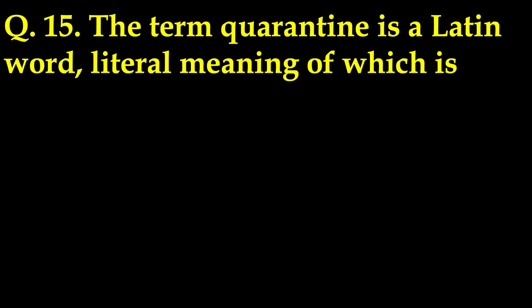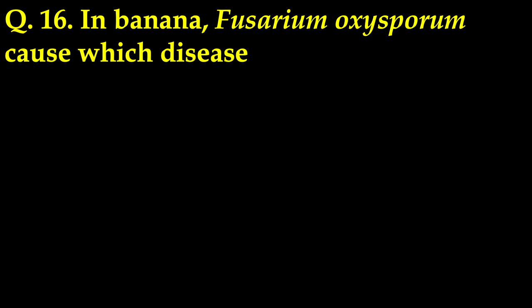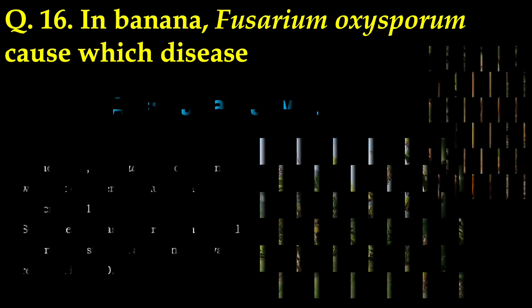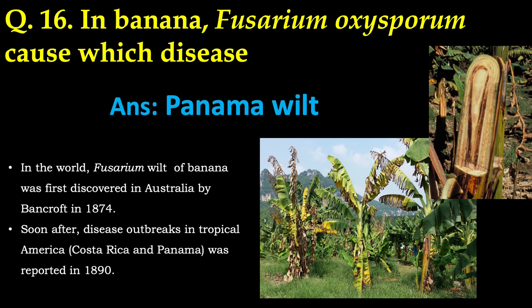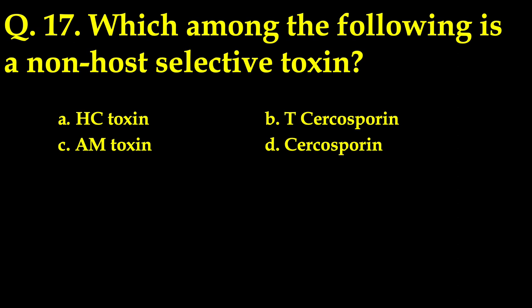This was a simple question. The term quarantine is a Latin word whose literal meaning is 40. In banana, Fusarium oxysporum causes which disease — there were four options, but the correct answer is Panama wilt. Fusarium wilt of banana was first discovered in Australia by Bancroft during 1874, and soon after a disease outbreak in tropical America — Costa Rica, Colon, and Panama — was reported during 1890.